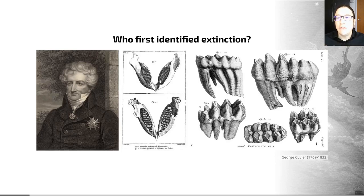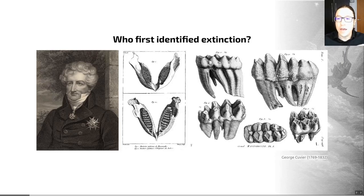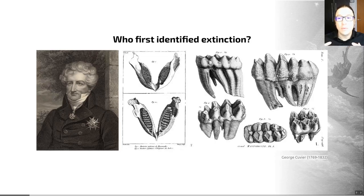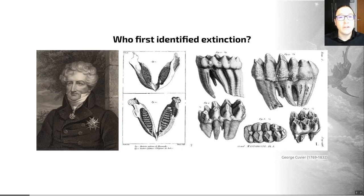For example, he looked at elephant anatomy and showed that the African and Indian elephants alive today are different species. The bottom image here in the middle is the jaw of a living Indian elephant. He also showed that mammoths — the jaw of a mammoth is shown on the top here and some of the teeth on the right — are different from either living elephant species. He demonstrated through comparative anatomy that the mammoths, the fossils we have from Europe and Siberia, are different from either of these living elephant species. Through this series of studies, he demonstrated that species must have a finite time and then go extinct.